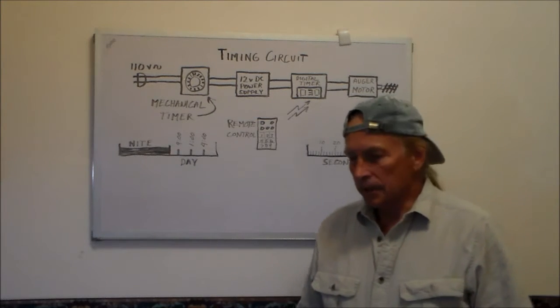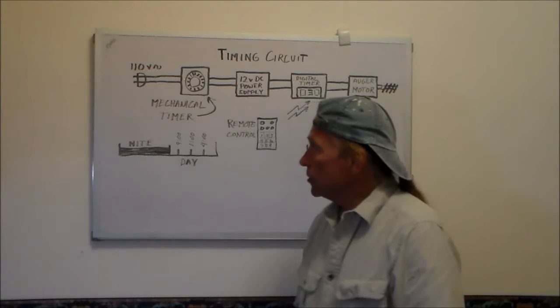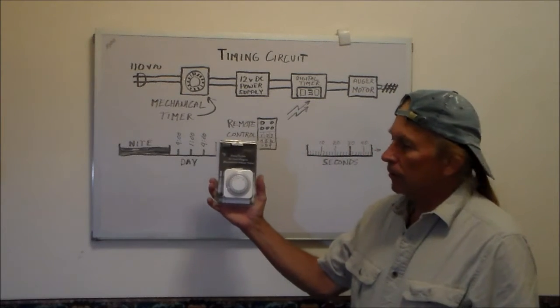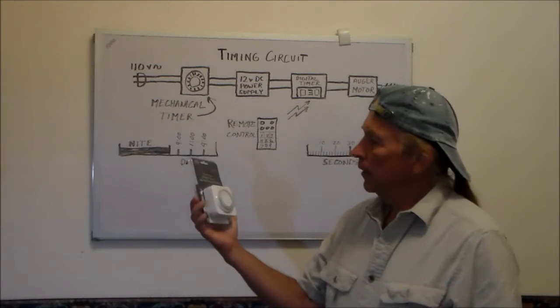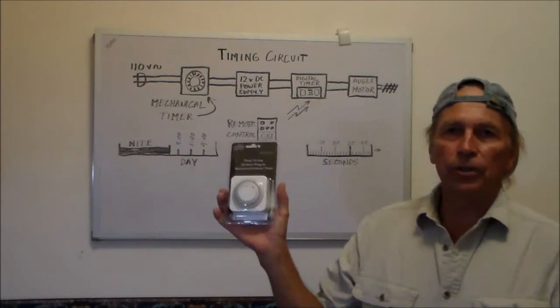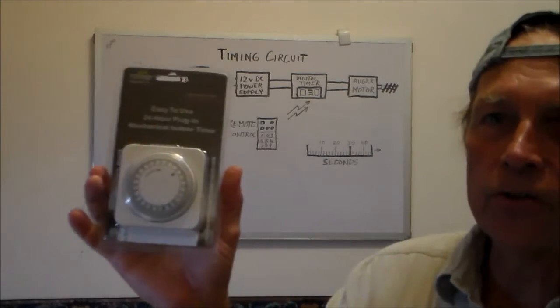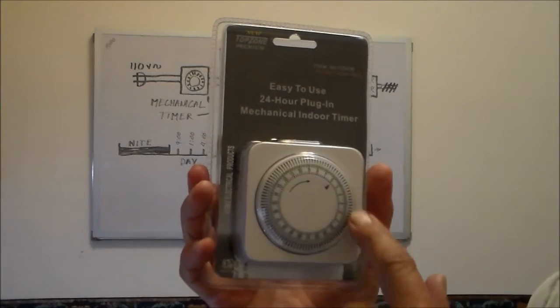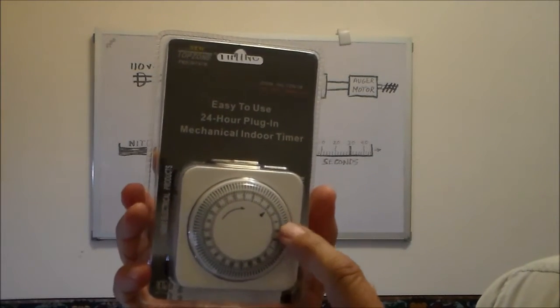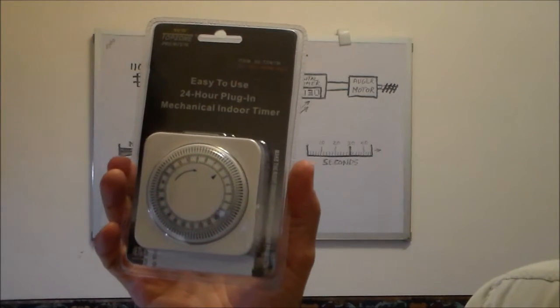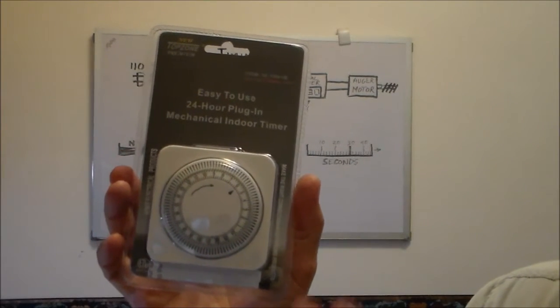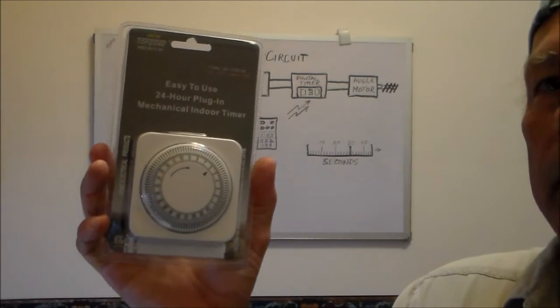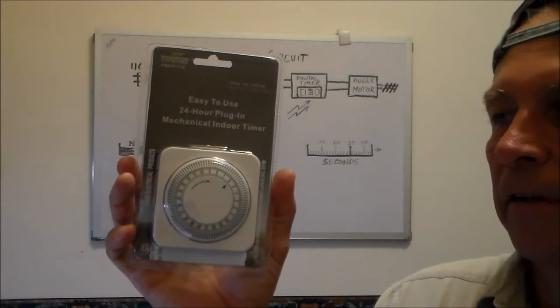To construct this timer you need to use a mechanical timer. This is a 24-hour timer that will turn the switch or power on and off. If you look closely here you see around this perimeter there's mechanical pins that you can set. What we want to do is set this to feed the fish three times during the day and not be running at nighttime.